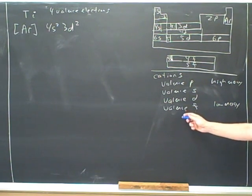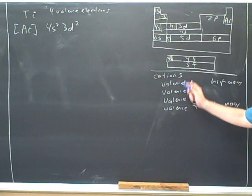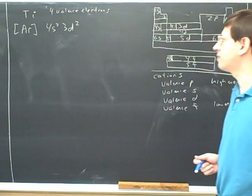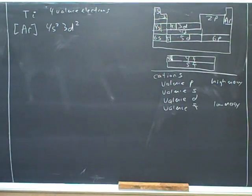Instead of saying valence here, we could have just said outer. We're focusing on the outer blocks. The valence orbitals are the outer orbitals. So let's see how that would work in this case. Let's, for example, think about titanium 2+.